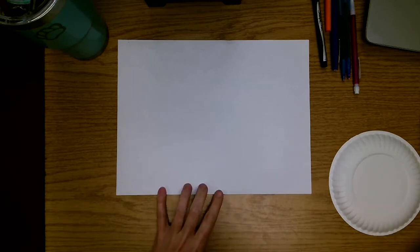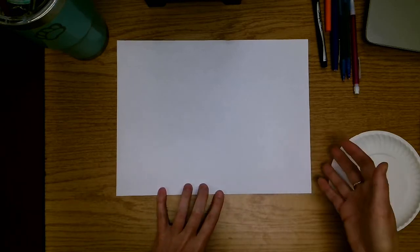All right boys and girls, today I'm going to show you how we are going to do the first steps to make our warm color, cool color sun and moon project. Starting out, we have a piece of paper.